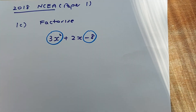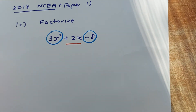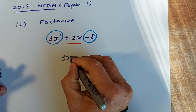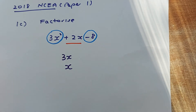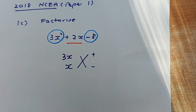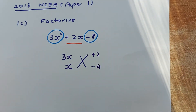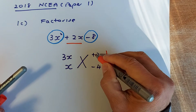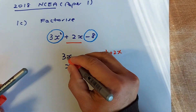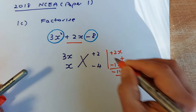Your objective is to find the middle number, 2x. The only possible factors of 3x² are 3x and x. Since the last term is -8, one factor must be positive and the other negative. There are many possibilities: 8 and 1, 4 and 2, etc. We try 2 and -4 first. Cross multiply: x times 2 is 2x, and 3x times -4 is -12x. Adding them gives -10x — that's not right, so we have to try again.